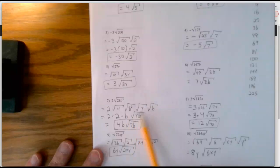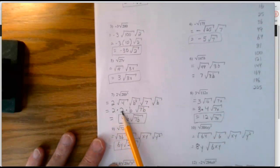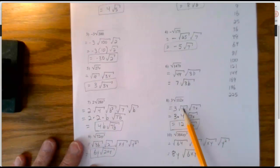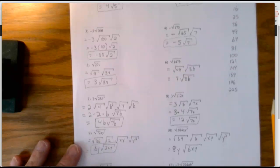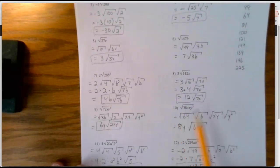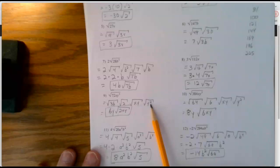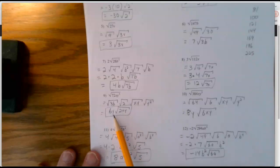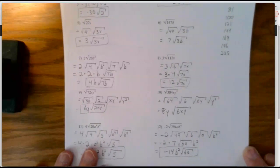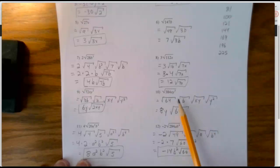28 is 4 times 7, and 4 is a perfect square — take the 2 out and multiply it times the 2 already in front. 112 is 16 times 7 — take 16 out, perfect square gives 4. 4 times 3 is 12, leave the 7x inside. 72 is 36 times 2 — I can take 2 y's out, but I have to leave 1 y inside; 2 y's outside becomes 1 y outside. 384 is 64 times 6 — again take 2 y's out.